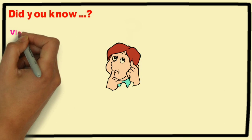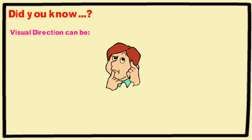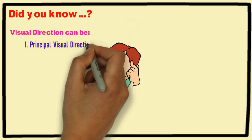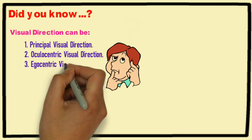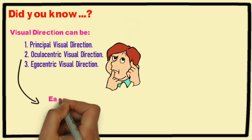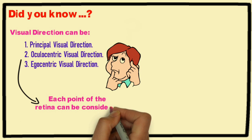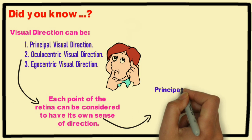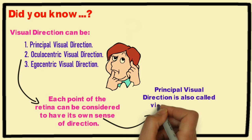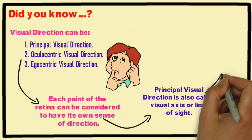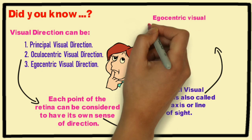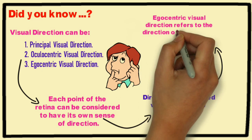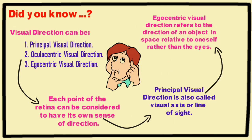Did you know visual direction can be principal visual direction, oculocentric visual direction, or egocentric visual direction? Each point of the retina can be considered to have its own sense of direction. Principal visual direction is also called the visual axis or line of sight. Egocentric visual direction refers to the direction of an object in space related to oneself rather than the eyes.